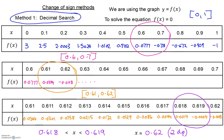So this is the first of our change of sign methods — it's very straightforward. You are solving an equation f of x equals 0 using the graph y equals f of x. The table matches what is happening on the graph — you're looking for a change of sign in f of x because that identifies where the graph has cut the x-axis, and that in turn identifies the root of the equation. We have found one of three different roots: x equals 0.62. You can now do a decimal search to find the other two roots to two decimal places.